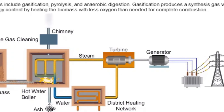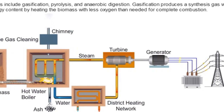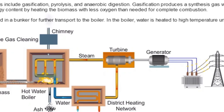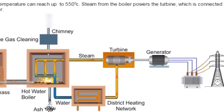Gasification produces a synthesis gas with usable energy content by heating the biomass with less oxygen than needed for complete combustion. Fuel is stored in a bunker for further transport to the boiler. In the boiler, water is heated to high temperature under pressure, and the steam temperature can reach up to 550 degrees centigrade. Steam from the boiler passes the turbine, which is connected to the generator.